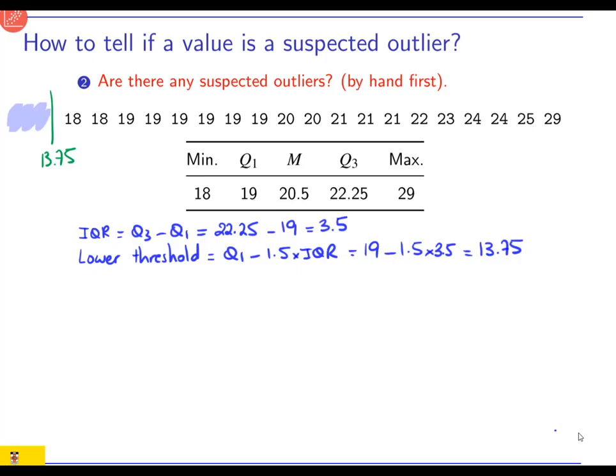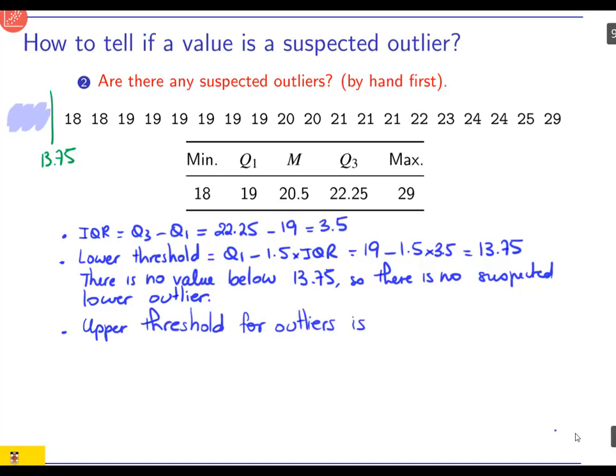So we can see that there's no lower suspected outlier. We now do the same thing for the upper outliers. So the upper threshold for outliers is the third quartile plus 1.5 times the interquartile range. That is 22.5 plus 1.5 times 3.5, and that is 27.75. So where does that lie? 27.75 would be here.